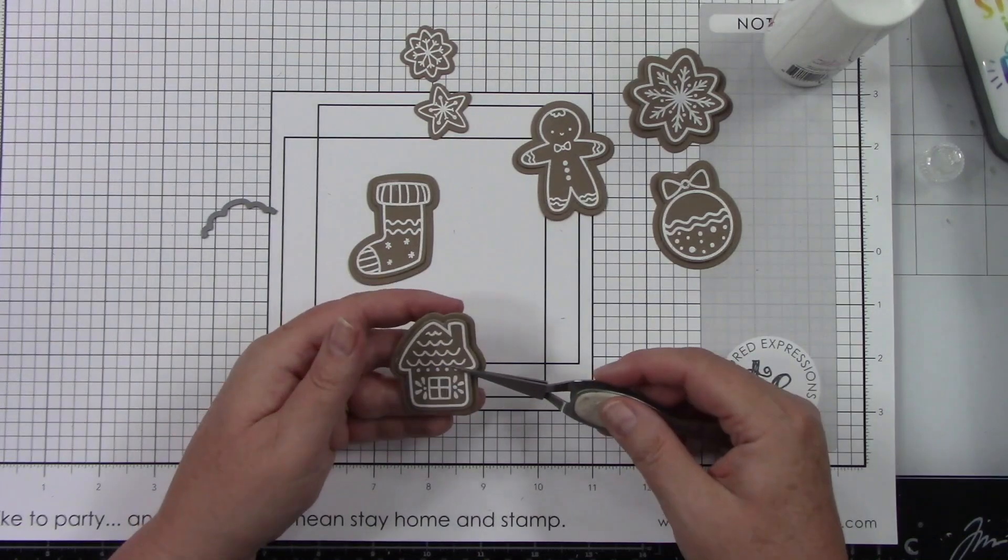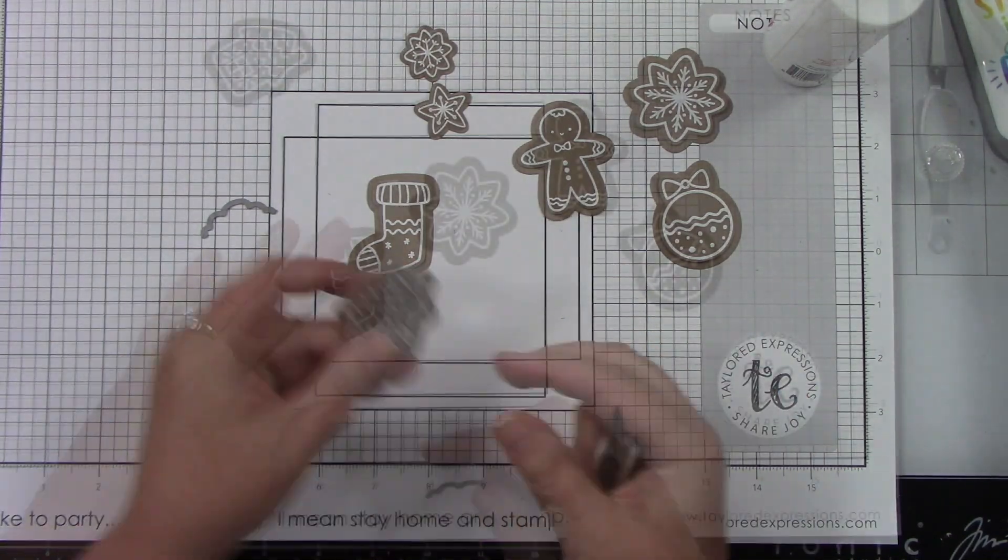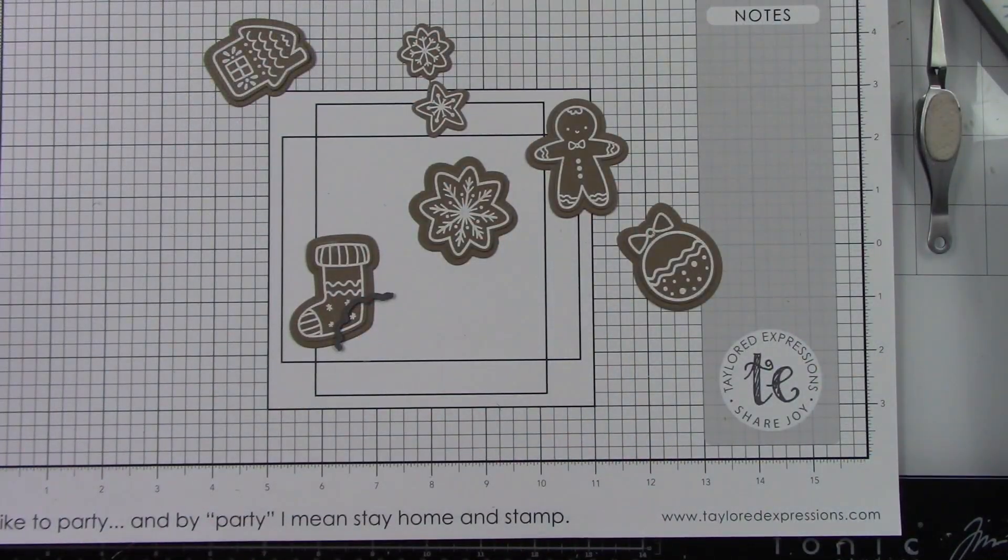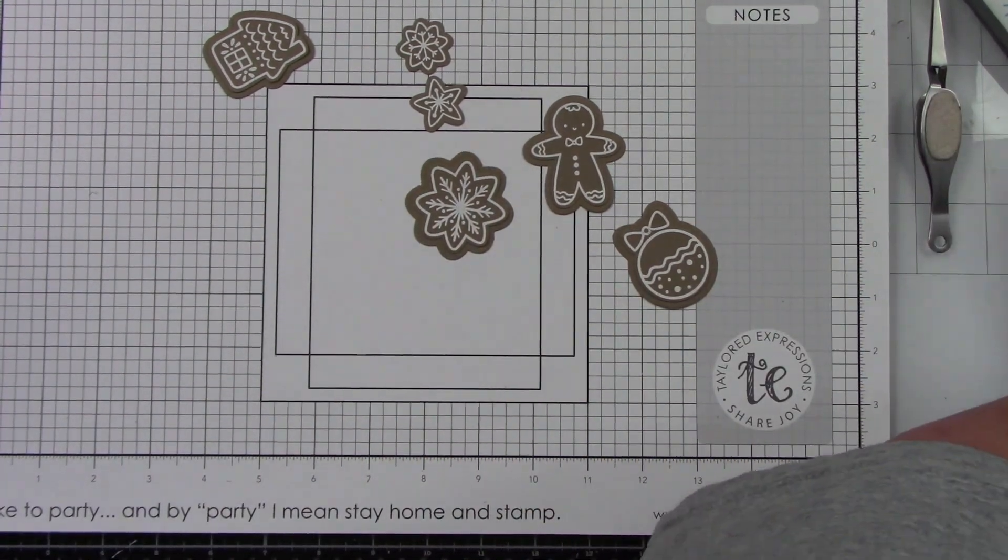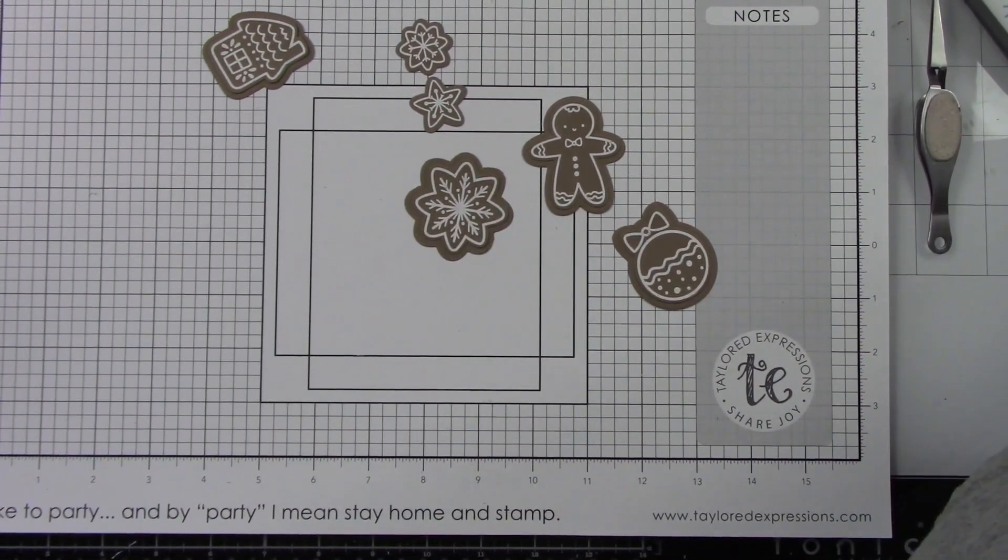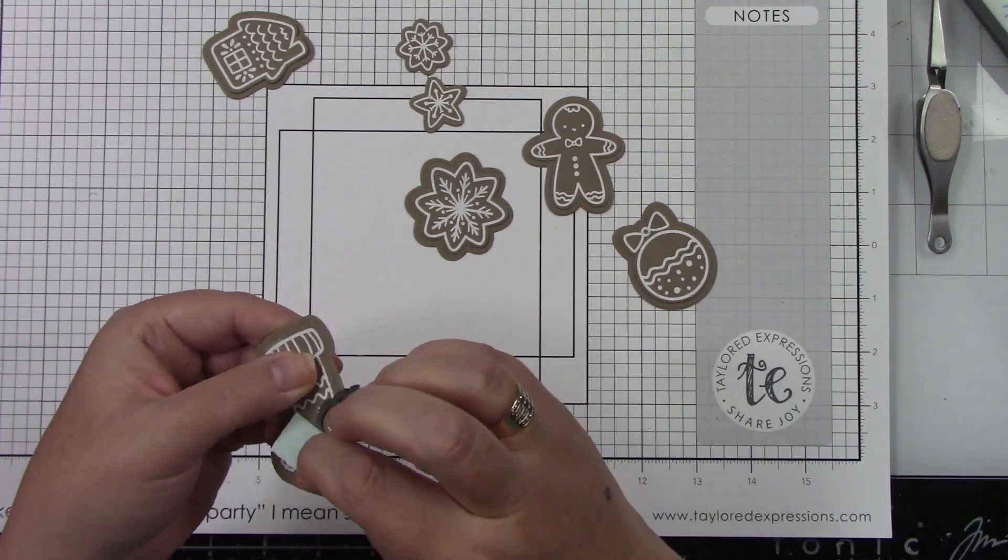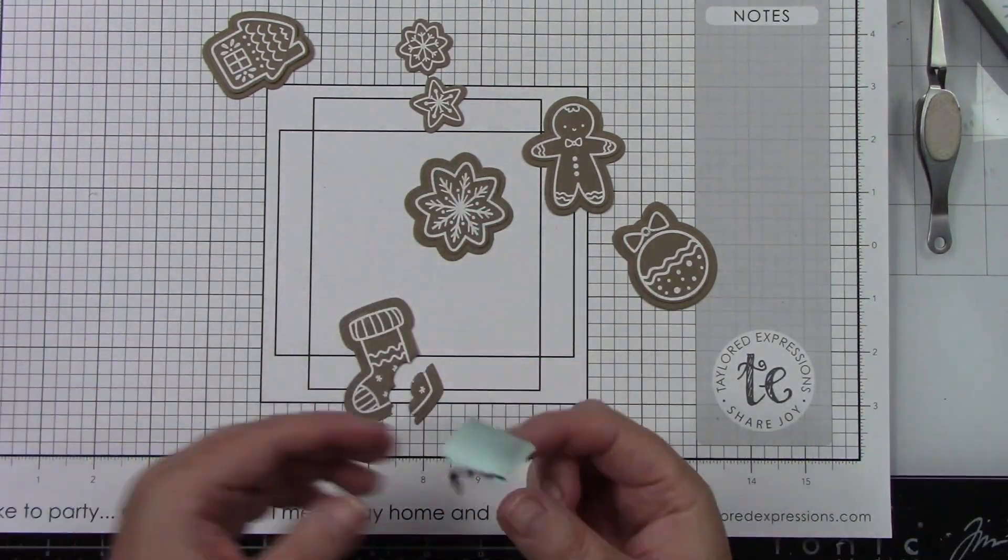I don't end up using the two little snowflakes or the ornament - I use the other pieces - but I wasn't sure yet which ones I was going to use so I just stamped them all and die cut them all. I can save that later for another project. I ran that little die cut through and look at that cute little bite. I love that.